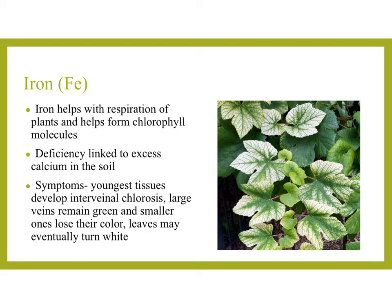Another trace element is iron, with the symbol Fe. Iron helps with respiration of plants and helps form chlorophyll molecules. If there's a deficiency, it's linked to excess calcium in the soil. So it's not wise to overwhelm soil with calcium when a plant is low in calcium, because it would then cause a deficiency in iron uptake. The symptoms include interveinal chlorosis in the youngest tissues — the large veins remain green while the smaller ones lose their color, and the leaves may eventually turn white.